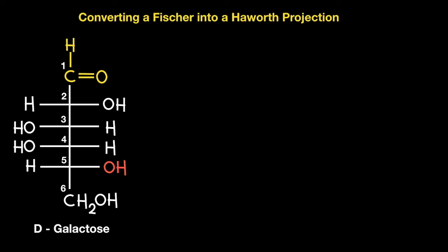In this presentation I will be illustrating how to convert an open chain structure known as a Fischer projection into its cyclic hemiacetyl structure which is known as a Haworth projection. The example I will be using is the monosaccharide D-galactose.